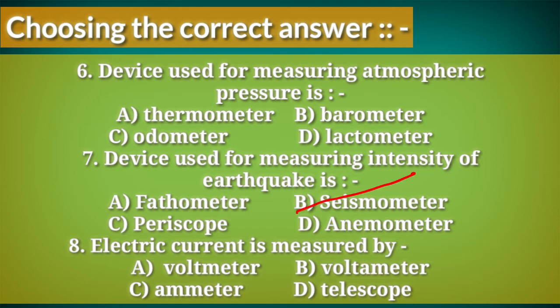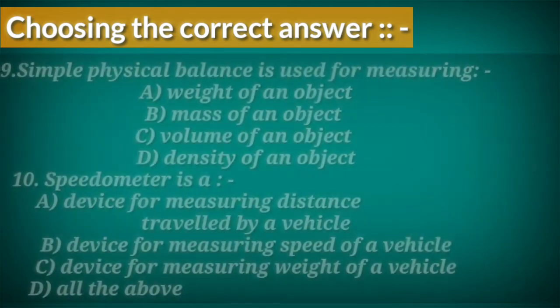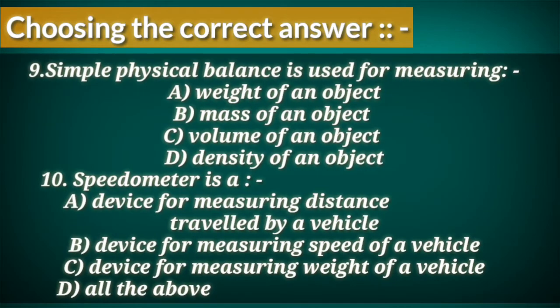Question 8: electric current is measured by — A. Voltmeter, B. Voltmeter, C. Ammeter, D. Telescope.